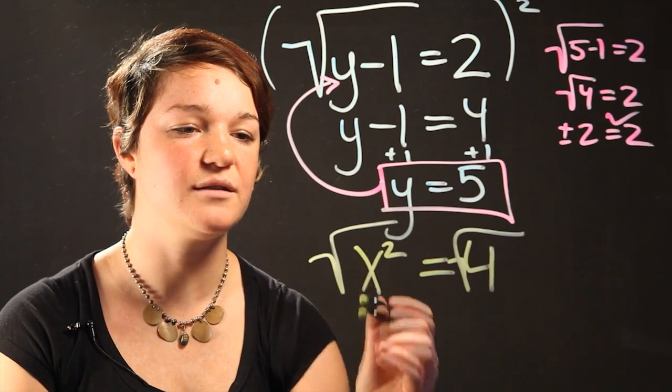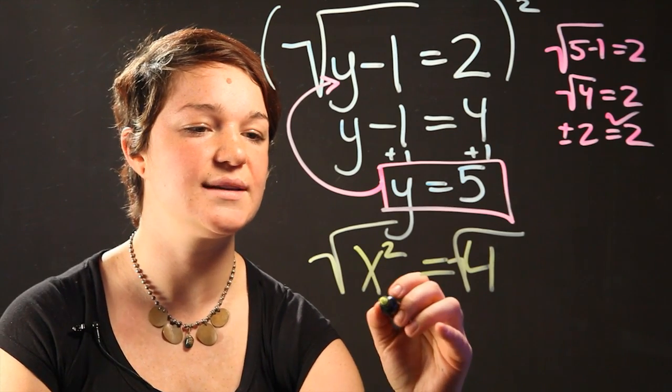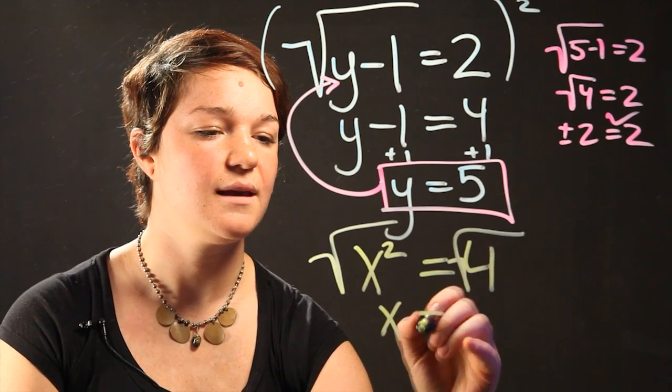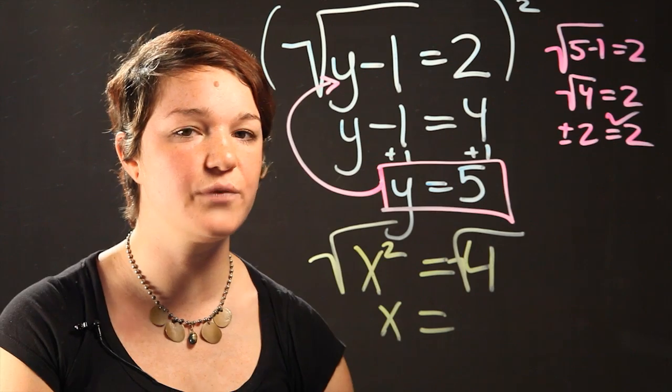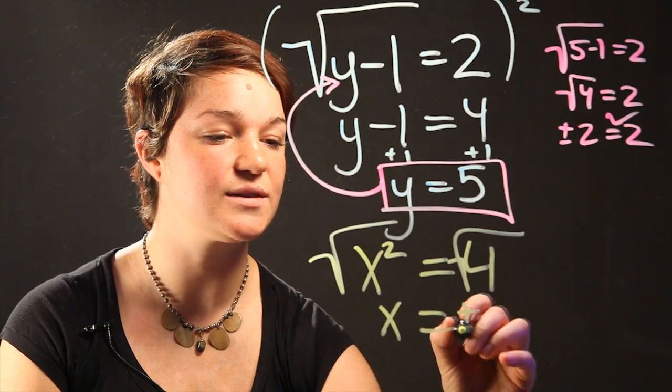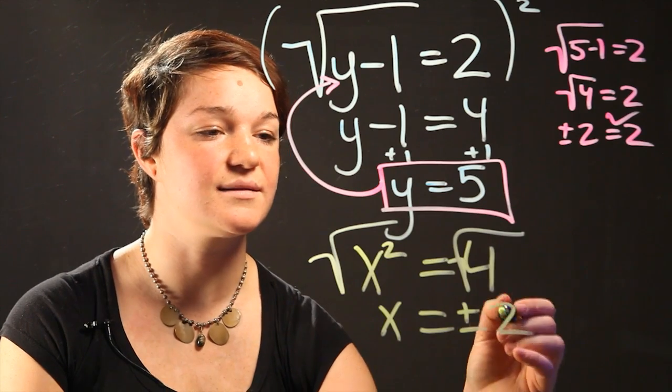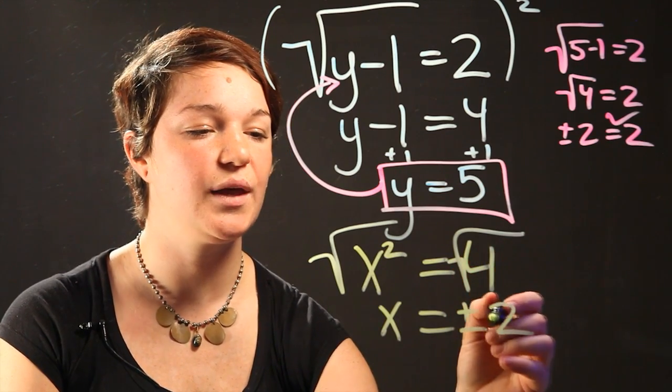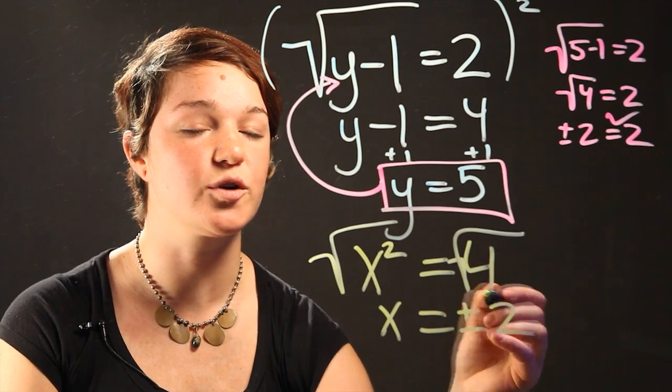Here, when you take the radical of x squared, what you have to remember is that you get x. And when you take the radical of 4, you have to realize that it has to be either plus or minus the answer. So the square root of 4 is 2, and it can be either plus or minus 2.